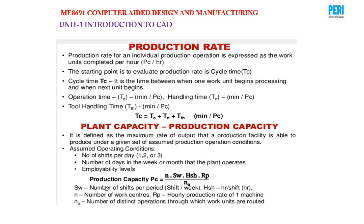Plant capacity — production capacity: PC equals N · SW · HSH · RP divided by N0. Here SW is the number of shifts per period, SH is hours per shift, N is the number of working centers, RP is the hourly production rate, and N0 is the number of distinct operations.